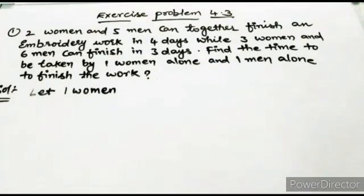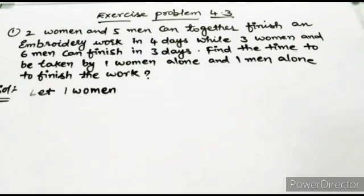Two women and five men can together finish an embroidery work in four days, while three women and six men can finish in three days. Find out the time taken by one woman alone and one man alone to finish the work. So: two women and five men take four days; three women and six men take three days. How many days will one woman and one man each take to finish the work?